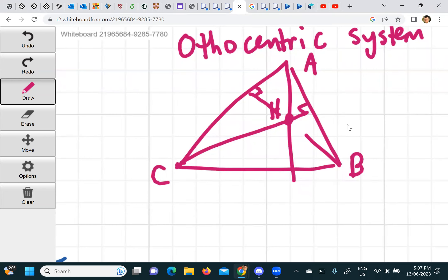C is the orthocenter of A, H, B. B is the orthocenter of A, H, C. And A is the orthocenter of H, B, C. Does that make sense?